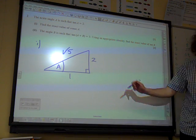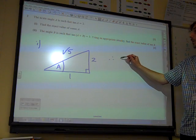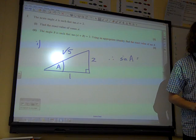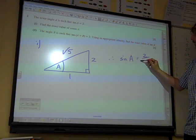In that case, sin A, which is the opposite over the hypotenuse, is 2 over root 5.